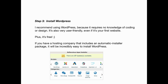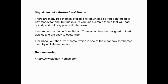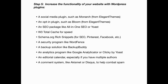If you have a hosting account that includes an automatic installer package, it will be incredibly easy to install WordPress. Step four: install a professional theme. There are many free themes available for download so you don't need to purchase one. Just make sure you use a simple theme that will load quickly and not bog down your website. I recommend a theme from Elegant Themes as they are designed to load quickly and are easy to customize.